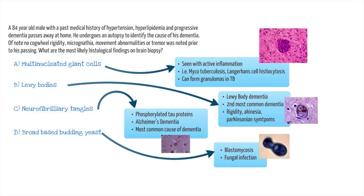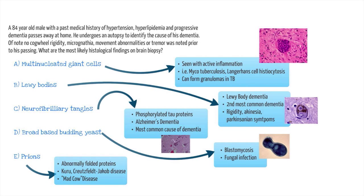This brings us to our last choice, choice E, which is prions. Prions are abnormally folded proteins that deposit within the brain parenchyma, leading to cell death. Prions lead to diseases like Kuru or Creutzfeldt-Jakob disease and are famous as the infectious protein chains known to cause mad cow disease in cows. CJD presents as dementia, and generally patients have corticospinal tract involvement causing hyperreflexia, Babinski sign, and spasticity. Given our patient does not have these symptoms, prion disease is unlikely.